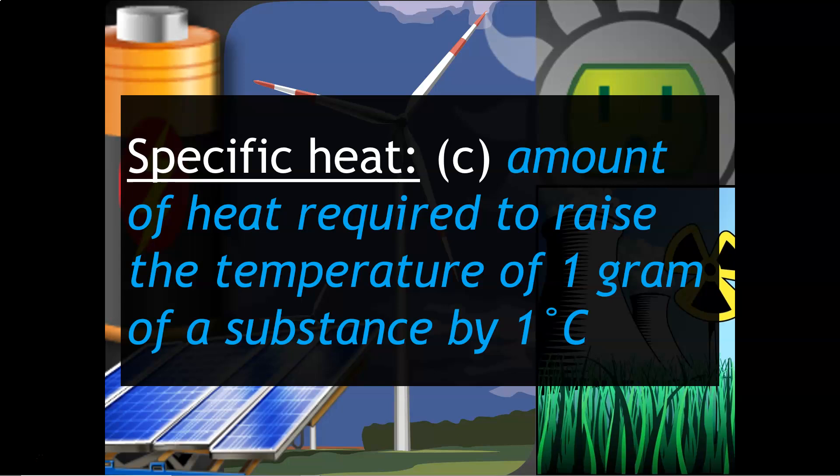Specific heat has the symbol c. This is the amount of heat required to raise the temperature of one gram of a substance by one degree Celsius.